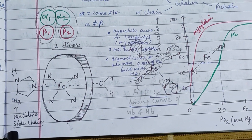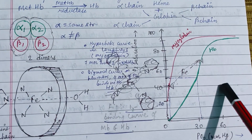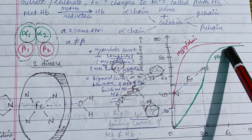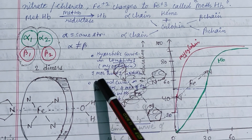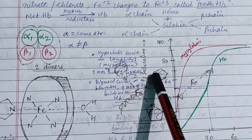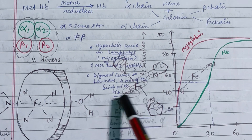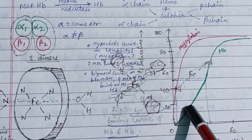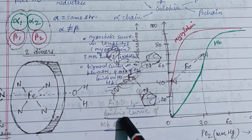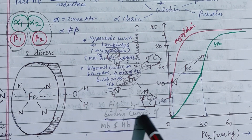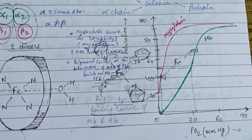The oxygen-binding curve of myoglobin is hyperbolic. In lamprey, one molecule of oxygen binds with the hemoglobin, giving a hyperbolic curve. In humans, four molecules of oxygen bind with hemoglobin, producing a sigmoid curve. This figure shows the oxygen-binding curves of myoglobin and hemoglobin in comparison.